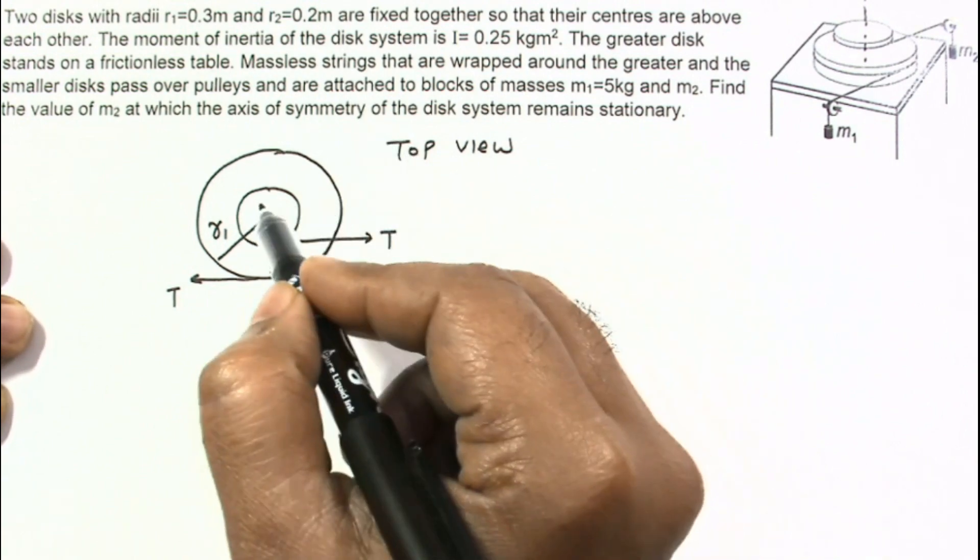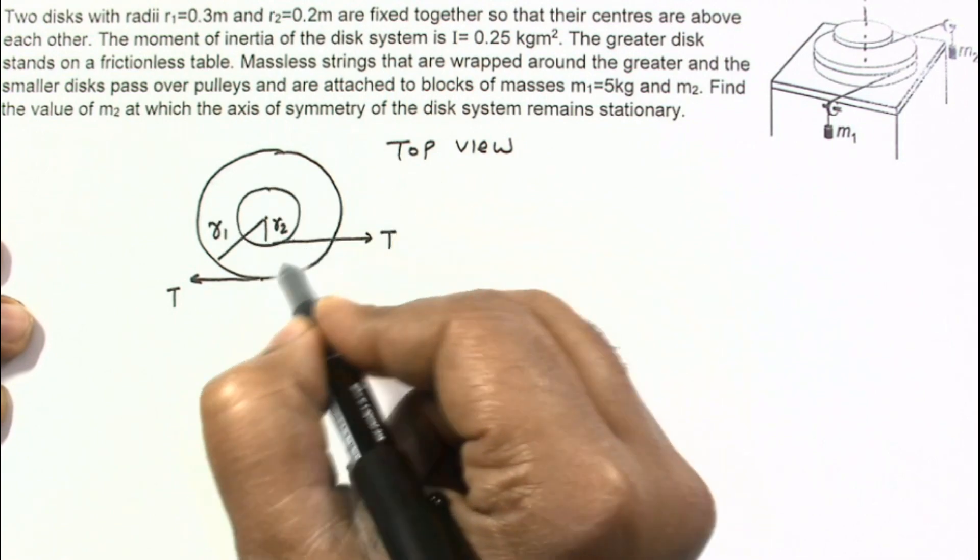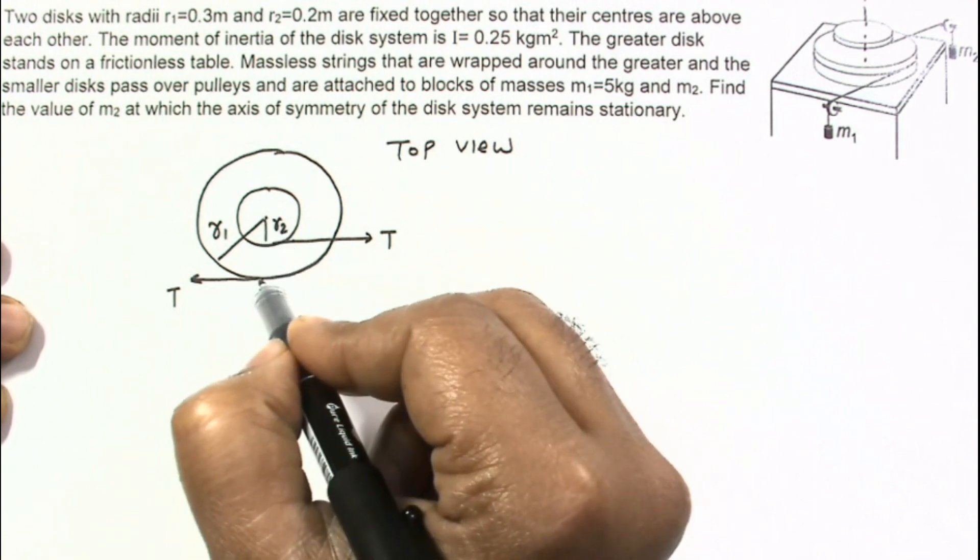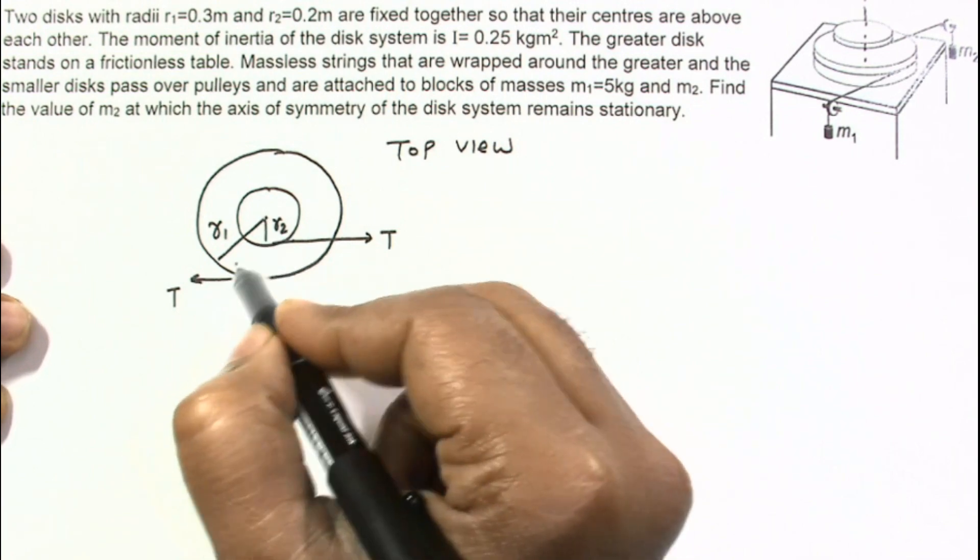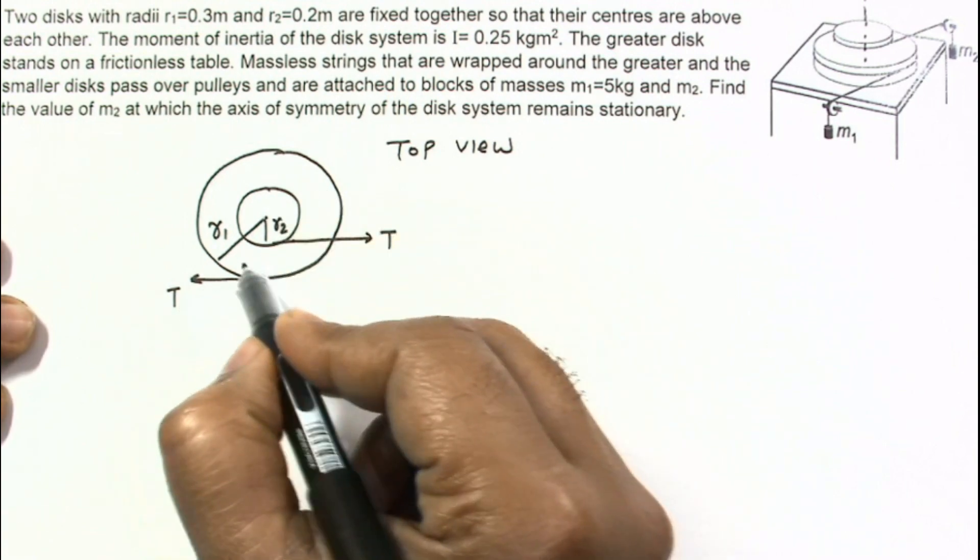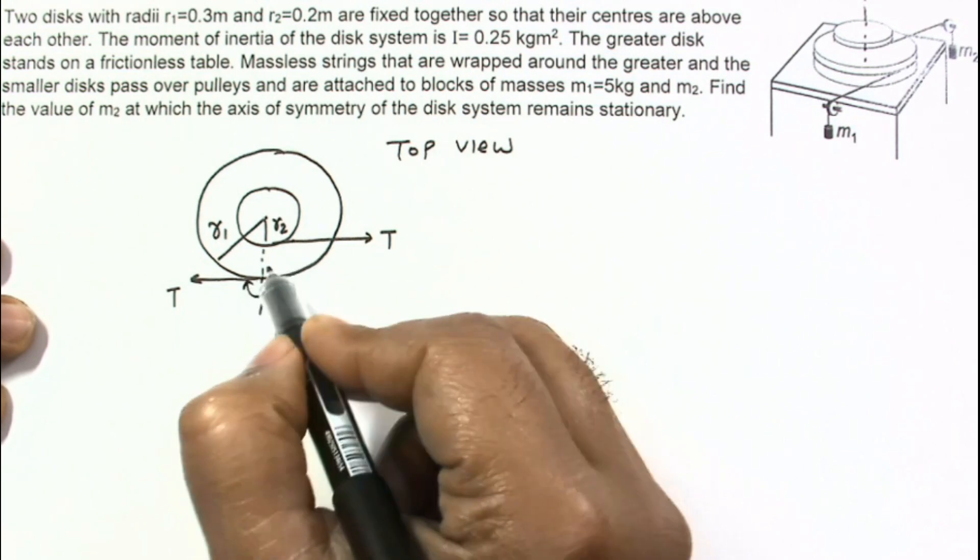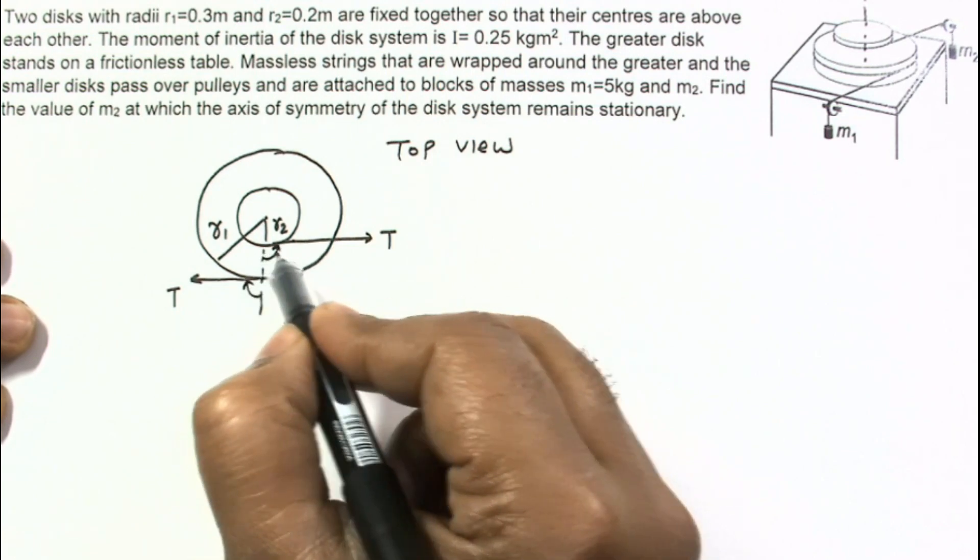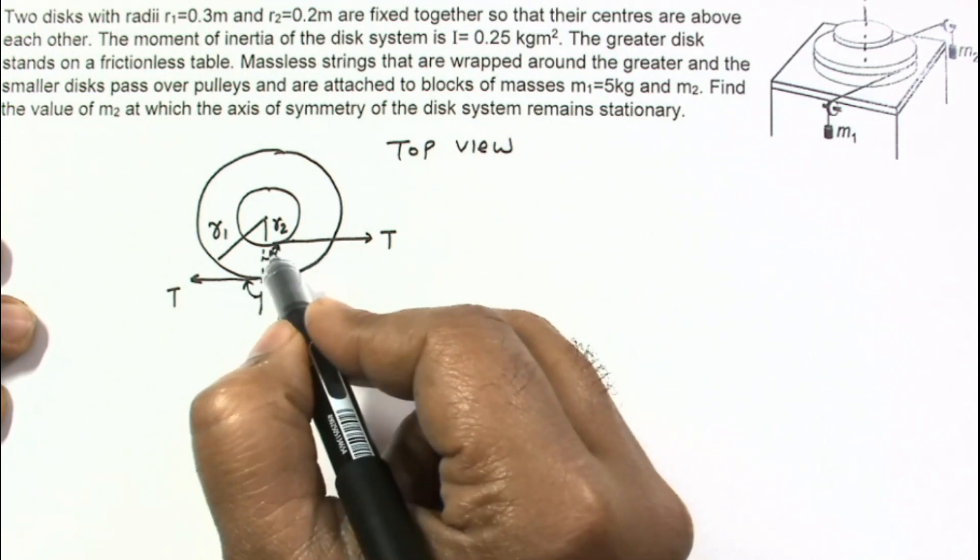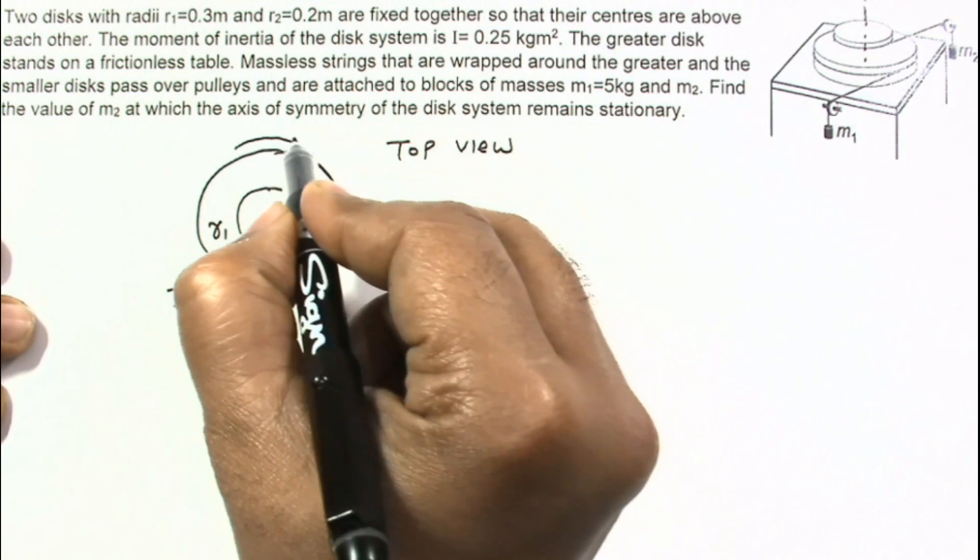But torque will not be zero. As this is the same tension, torque here is T times R2 and torque due to this tension is T times R1, and obviously R1 and R2 are different. This tension will produce torque in the clockwise direction and this is in anticlockwise direction. So net torque is produced in clockwise direction.